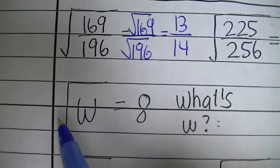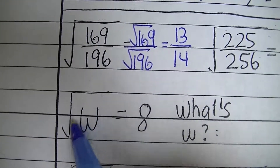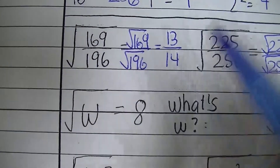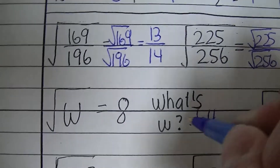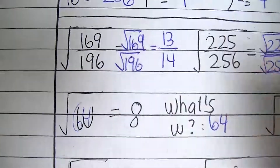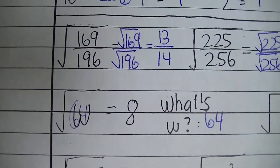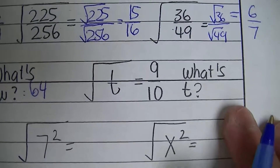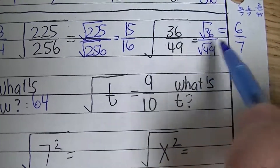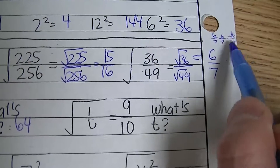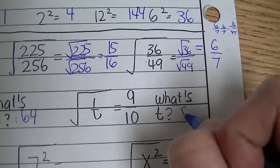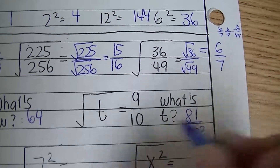Here's some backwards thinking. The square root of w equals 8 — so what is the value of w? You should get 64, because when you substitute 64 in for w, the square root of 64 is 8, making the equation true. For the next one, where you get a fraction as an answer: you would go 9/10 times 9/10 and get 81/100. That's the value of t.